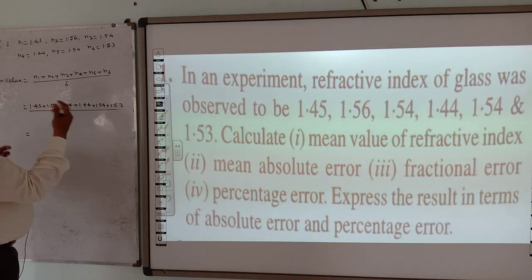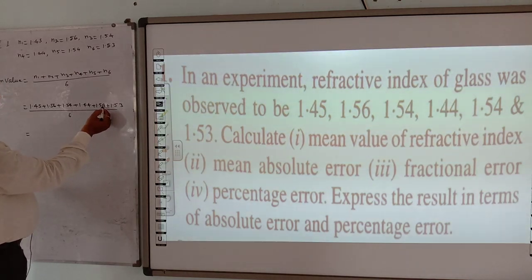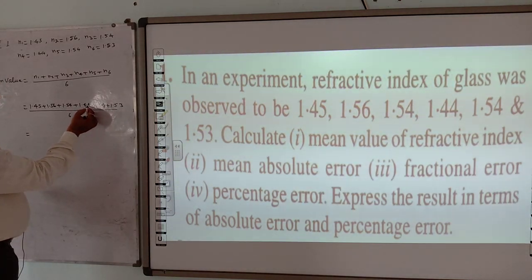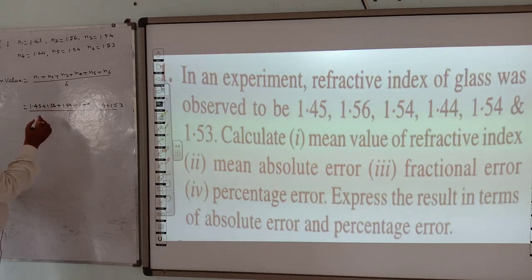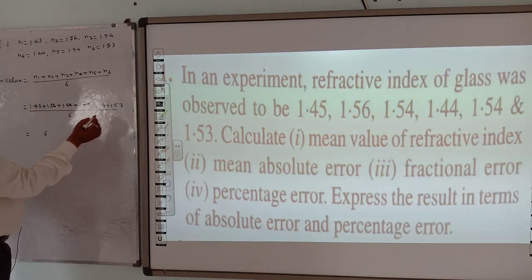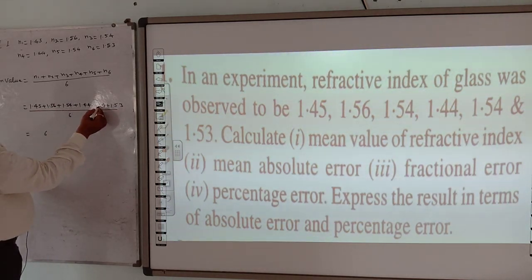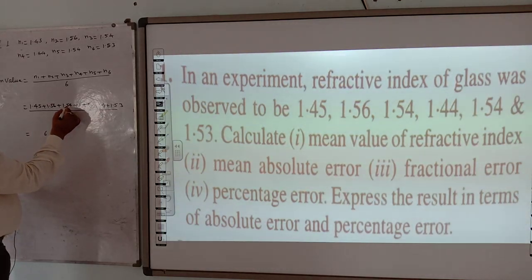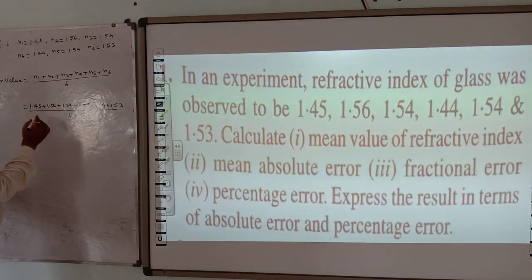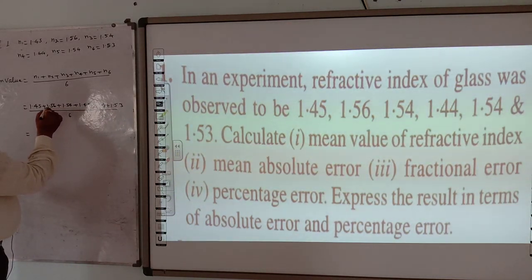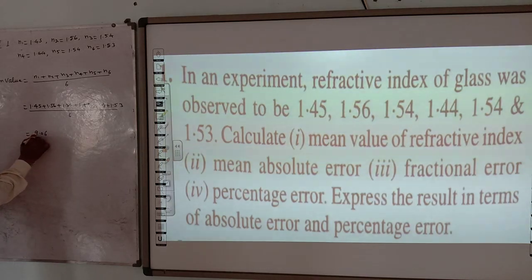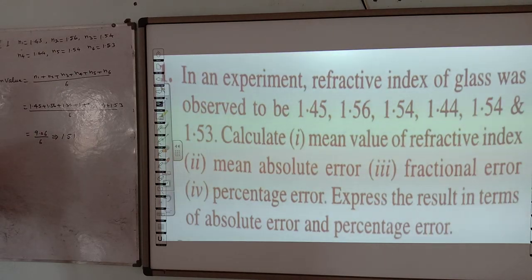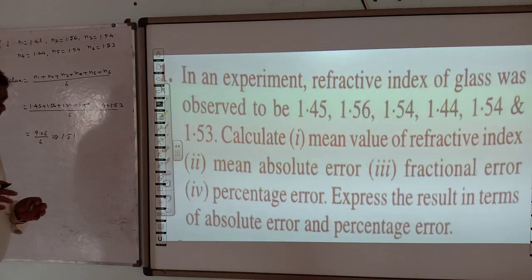We add all the values — since all have two decimal places, adding them gives 9.06 divided by 6, which gives us our mean value of 1.51. So the mean value is now found. That completes Part 1.